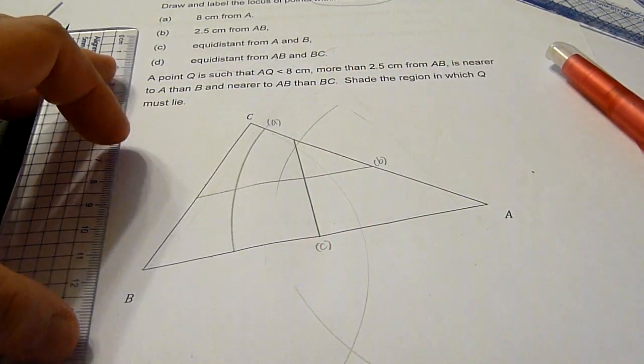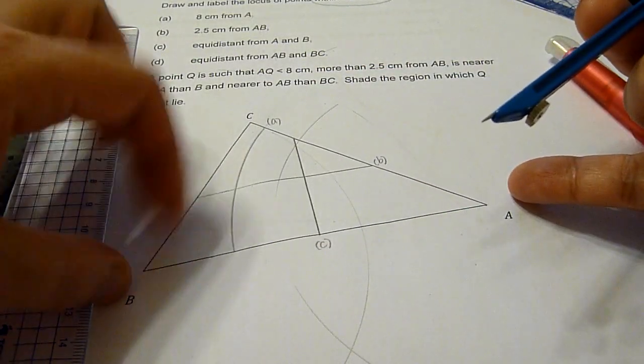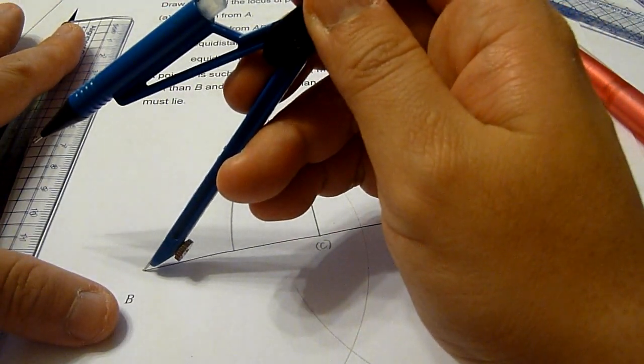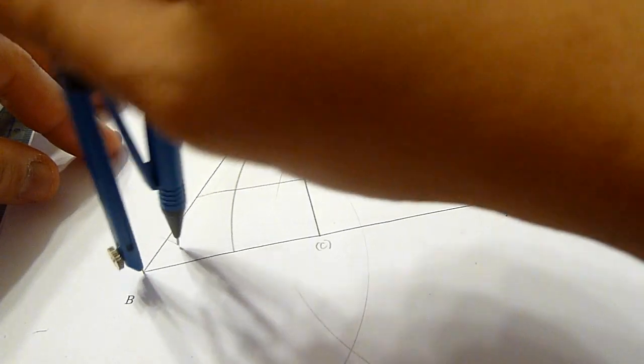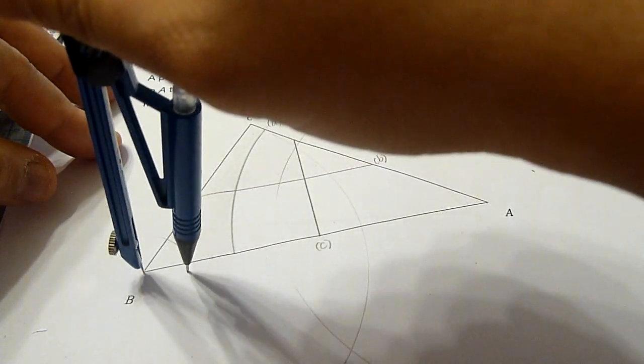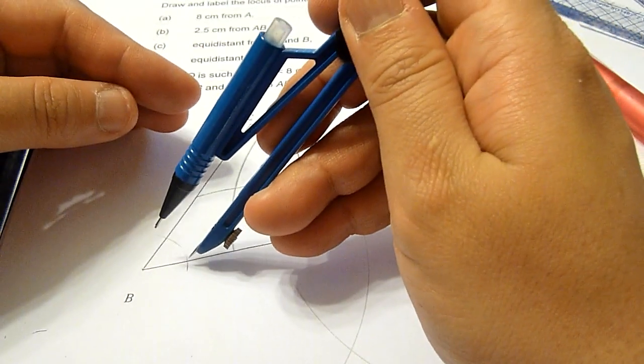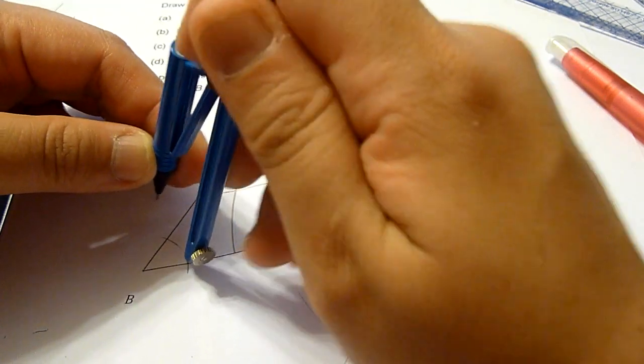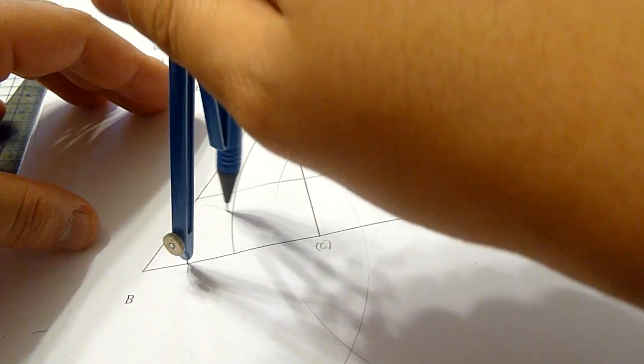And D says equal distance from AB and BC. So AB and BC is here. Equal distance will mean that we have to construct an angle bisector. So first, we mark two arcs on the arm of the angle, and we mark another pair of arcs here.